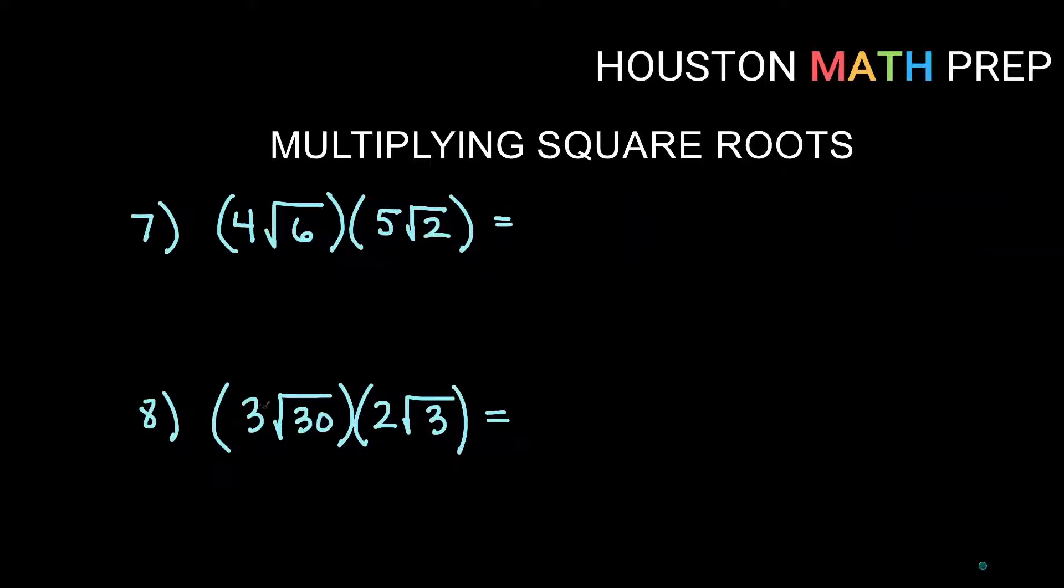Let's do a little combo of what we've been doing here. So we have 4 root 6 times 5 root 2. So first thing, we know outsides are going to multiply, 4 times 5. That'll give us 20. And then the insides of the roots should multiply together. So inside, we'll get 6 times 2, which is 12.